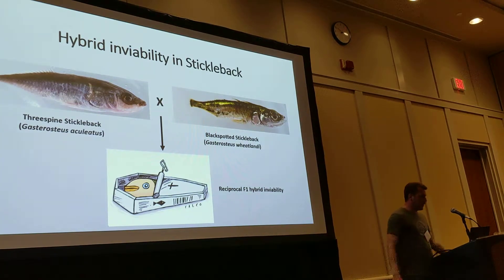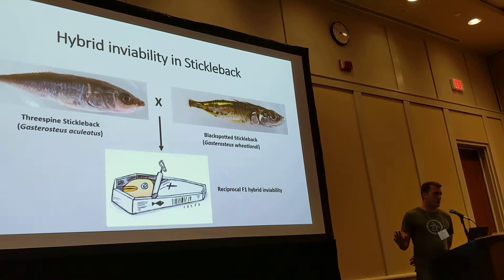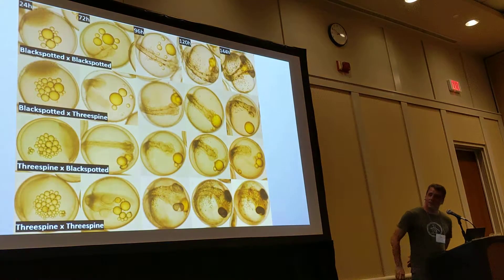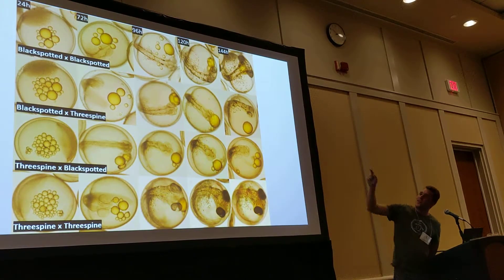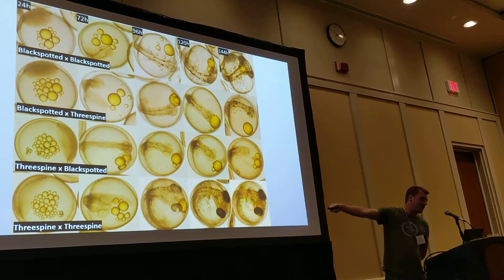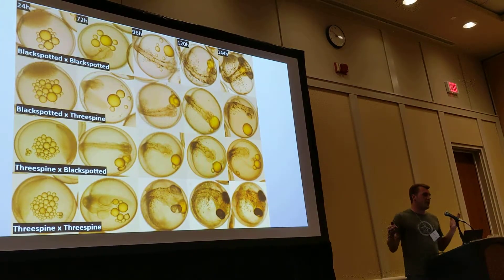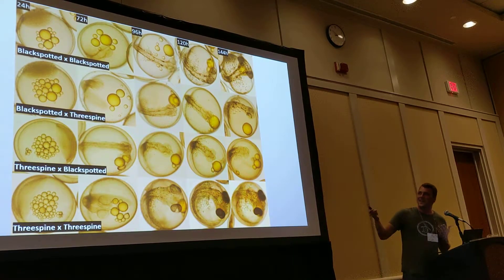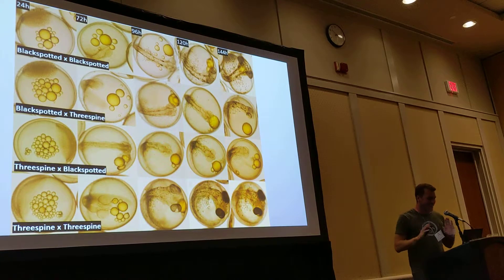I'm trying to study this in stickleback fish — specifically three-spined stickleback and black-spotted stickleback. If you cross them reciprocally, 100% of their offspring will die. This is a developmental time course: normal three-spined stickleback is shown at top and bottom for comparison, and in the middle are the reciprocal crosses. These are the best fish I could find. Normally after a couple of days they turn into blobs of cells — it can take a couple of days, it can take 30 days — but they never become a fish. They just turn into a mass of cells, and they die.